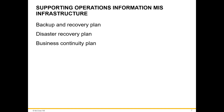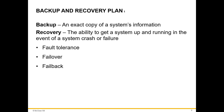Information MIS infrastructure has three main elements: backup and recovery plan, disaster recovery plan and business continuity plan. Backup is an exact copy of a system's information. Recovery is the ability to get a system up and running in the event of a system crash or failure. Fault tolerance is the ability of a system to respond to failure — for example, a fault tolerant system will continue its operation in spite of a flood or power outage.